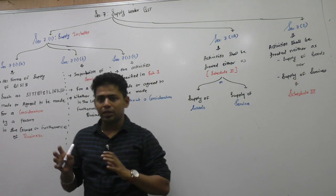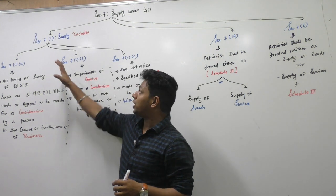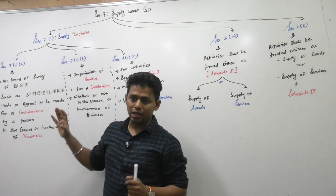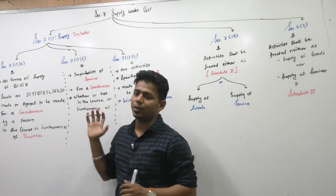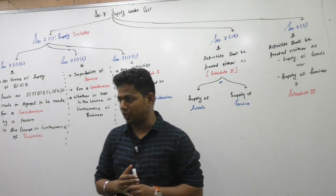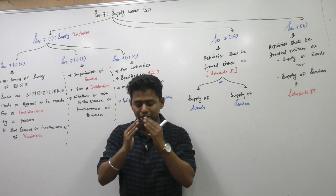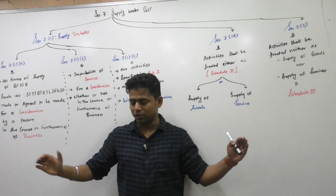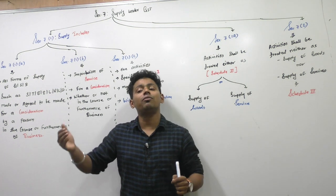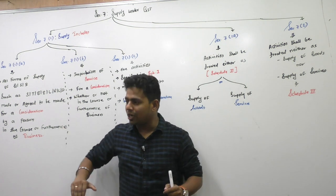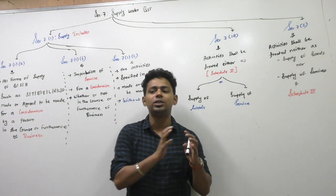Out of these 3 subsections, subsection 1 is the core. Subsection 1 is further divided into 3 clauses: Section 7(1)(A), 7(1)(B), and Section 7(1)(C). So this is the image you should have in your mind: Section 7 is divided into 3 main subsections — Section 7(1), Section 7(1A), and Section 7(2). Section 7(1) is further divided into 3 clauses: 7(1)(A), 7(1)(B), and 7(1)(C).